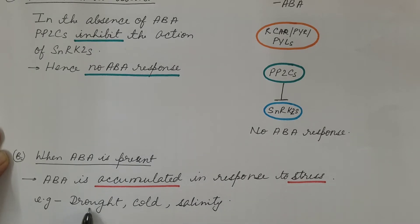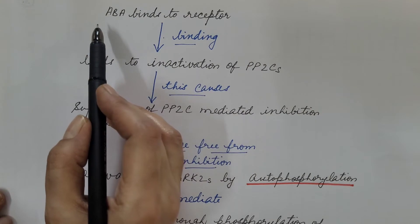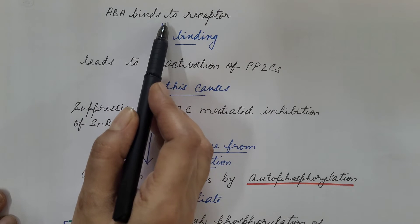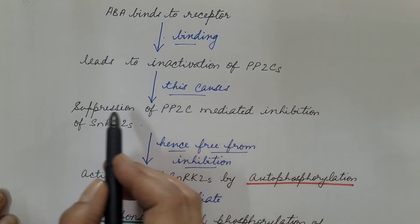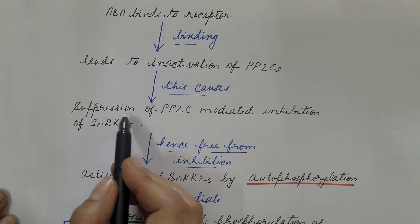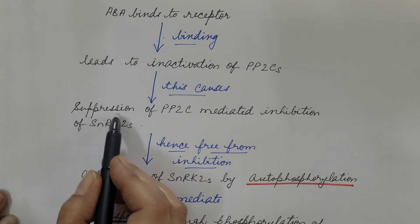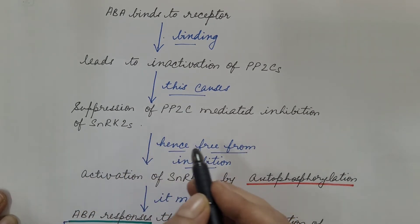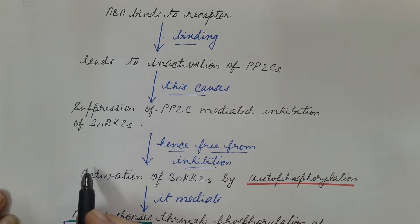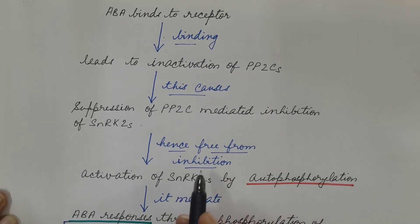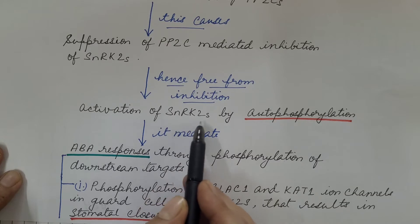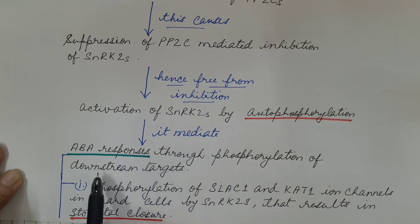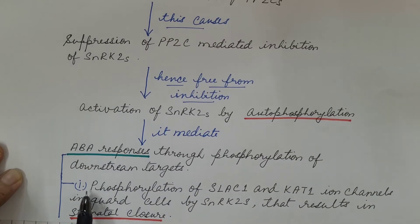The second situation is when abscisic acid is present — it accumulates in response to stress such as drought, cold, and salinity. Abscisic acid binds to the receptor, and this binding leads to inactivation of PP2Cs, causing suppression of PP2C-mediated inhibition of SnRK2. Now PP2C is not able to inhibit SnRK2, so SnRK2 is free from inhibition and becomes activated by autophosphorylation, with the phosphate group provided by ATP.